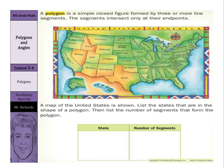Hi, Mr. Richards here and today's lesson is on polygons and angles. Our objective is to find the sum of the angle measures of a polygon and the measure of one interior angle of a regular polygon.